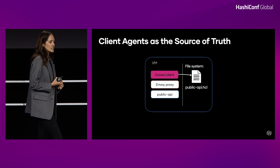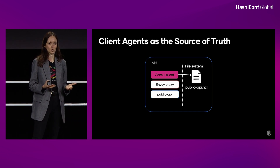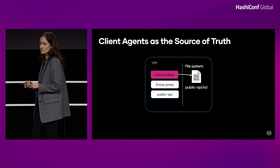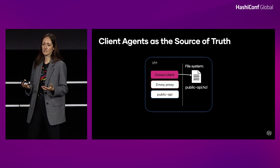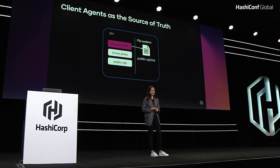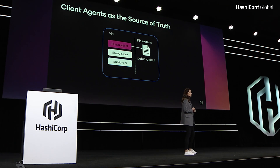The first challenge I want to cover is that client agents being the source of truth for your services. What we're looking at here is what it would look like to deploy something like the public API service from HashiCups on VMs. You will need your Envoy proxy and your Consul client running on the VM. To register the service, it's very easy for those Consul clients to assume some persistent state and to have the registration file always available.